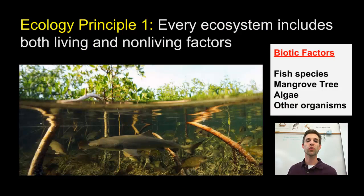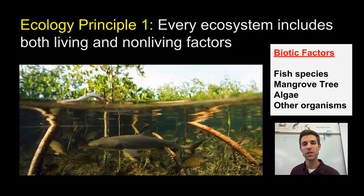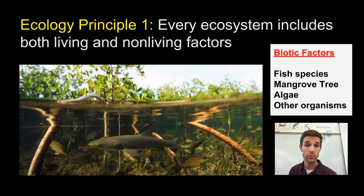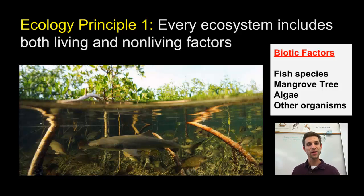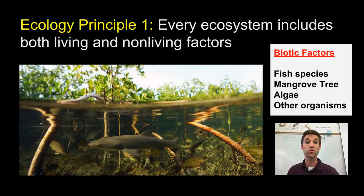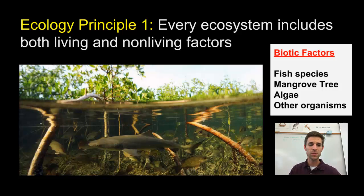We've come to our first ecological principle: every ecosystem includes both living and nonliving factors. All living things in the ecosystem are called biotic factors — the prefix 'bio' refers to living, just like biology. In this mangrove ecosystem, the living things include the fish, the mangrove tree, algae and other seaweed, bacteria in the water, and other plant species. All the living things in this ecosystem are called the biotic factors.